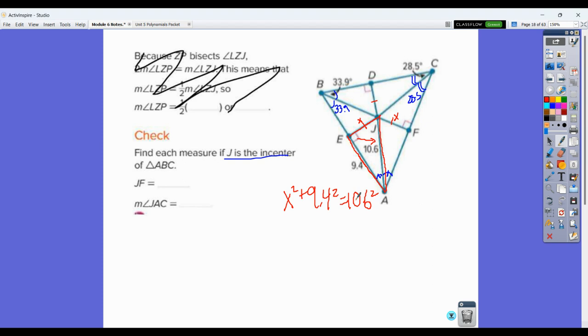If we solve through this one, we would do 9.4 squared, which would give us 88.36, 10.6 squared, which would give us 112.36. If we subtract those from each other, we're going to get 24. So we're going to get X squared is equal to 24 and take a square root. We're going to do the square root of 24, and that's going to give us about 4.9. So there's my approximate answer. I'm just going to go to one decimal. So that's what my measure of JF is.